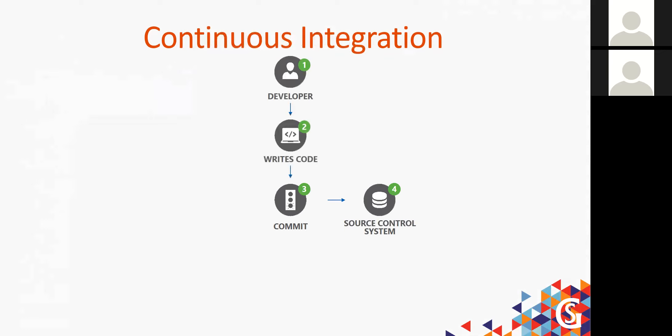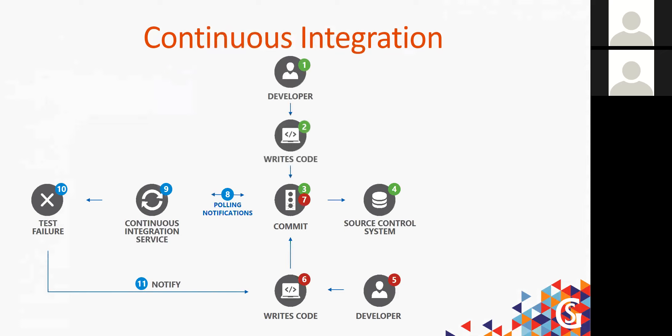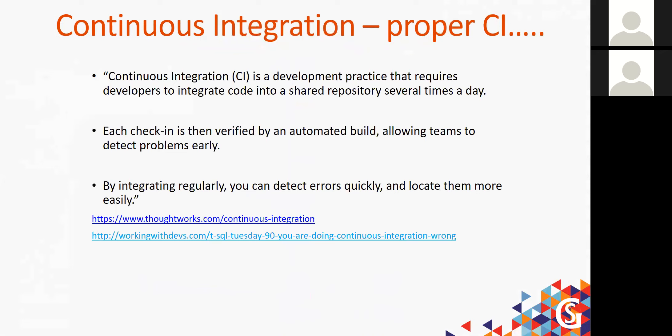Let's talk about continuous integration. I like to use this animation: a developer writes code and commits it to source control, another developer does the same. This goes into our continuous integration service, which goes to our build server. If there's a test failure, the developer is immediately notified, fixes the code, it goes back, passes the test, and we're ready to build and deploy. Continuous integration requires developers to push code several times a day, with each check-in verified by an automated build, allowing teams to detect problems early.